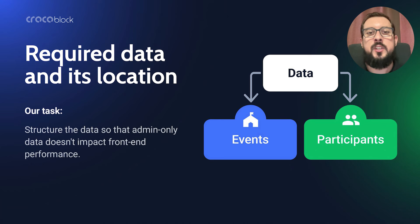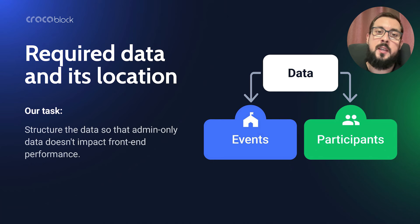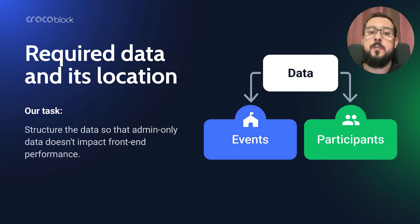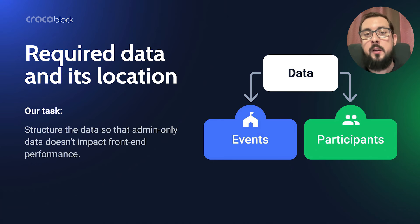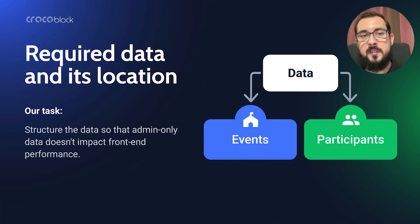The first thing we should clarify is what data we need and where we need to have it. As an example let's take the simplest case of an event agency website where people can view events and register for them. Here we have two entities: an event and a participant in the event. The event should be displayed on the front end, while the participant is an entity that only the website administrator should have access to. So some data may be required both on the front end and in the backend, while other data may be needed only in the admin area. Our first task is to organize the data in a way that entities needed only in the admin area don't affect the performance of the front end.